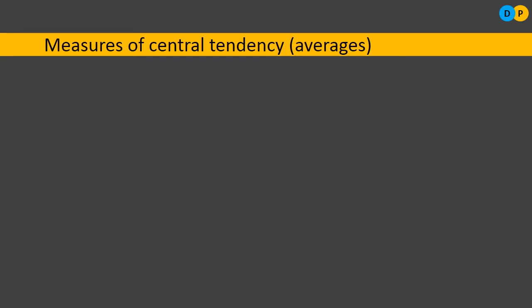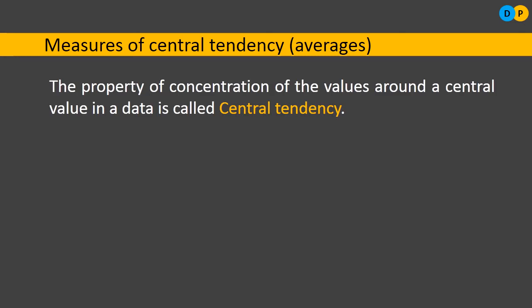Central tendency is also useful for comparison. If we want to compare one class with another, instead of comparing individual students, we compare the average or percentage of one entire class with another. This makes it easy to determine which class is performing better. The property of concentration of values around a central value in a data is called central tendency.